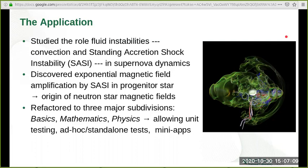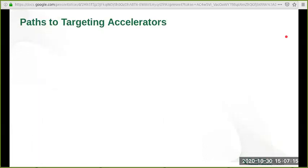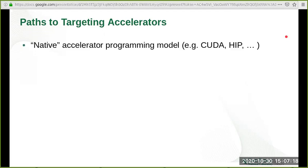In the rest of this talk, I will describe how we use OpenMP offload to target accelerators. Initially, we considered the paths available to us in targeting accelerators. One option is to use the native accelerator programming model such as CUDA or HIP for NVIDIA and AMD GPUs respectively.